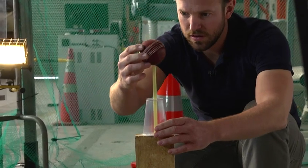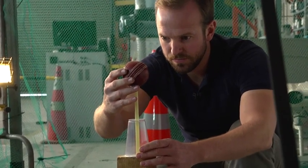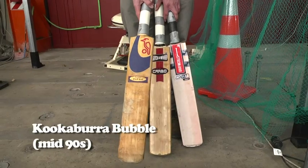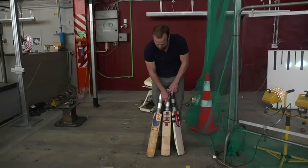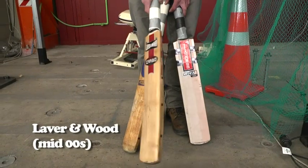The testing started with three generations of bats. We've got a variety of ages here. The Kookaburra bubble - I think everybody who was around remembers when the bubble came out. We've got the Laver and Wood, quite a different profile on that.